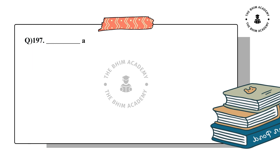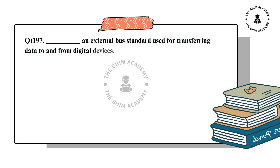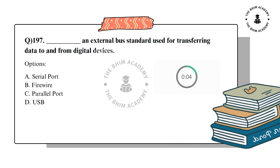Question number 197. Dash is an external bus standard used for transferring data to and from digital devices. The options are: A. Serial port, B. Fire wire, C. Parallel port, D. USB. The correct answer is D. USB.